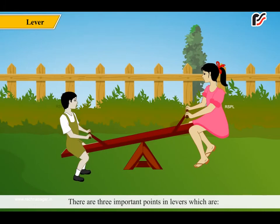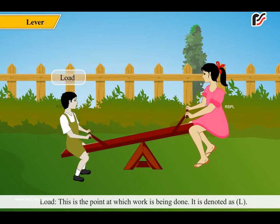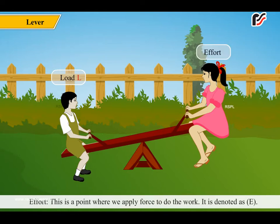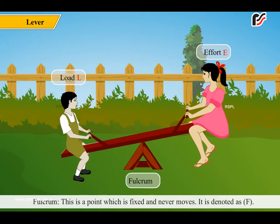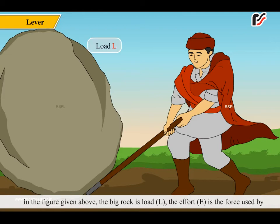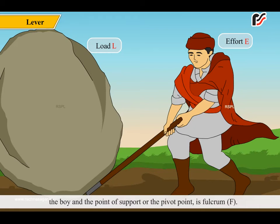There are three important points in levers. Load (L): This is the point at which work is being done. Effort (E): This is the point where we apply force to do the work. Fulcrum (F): This is a point which is fixed and never moves. In the figure given above, the big rock is the load (L), the effort (E) is the force used by the boy, and the point of support or pivot point is the fulcrum (F).